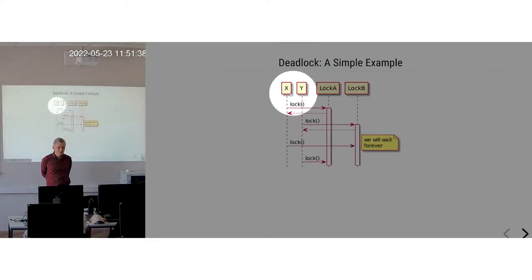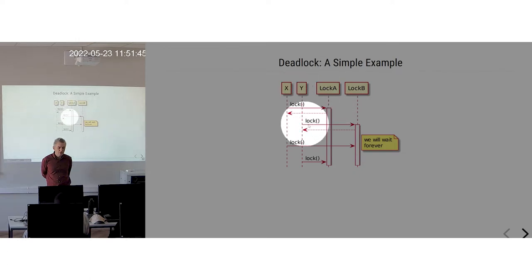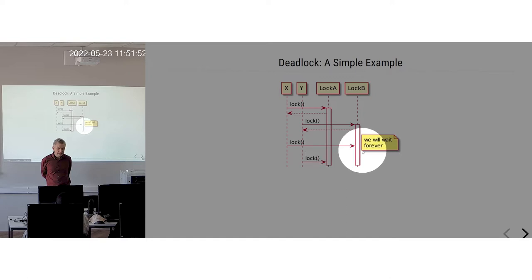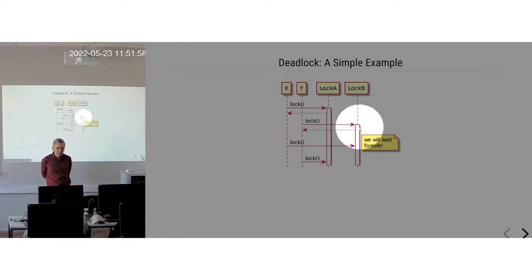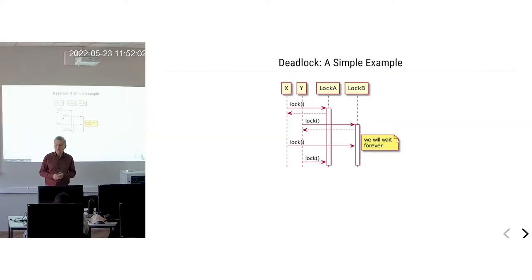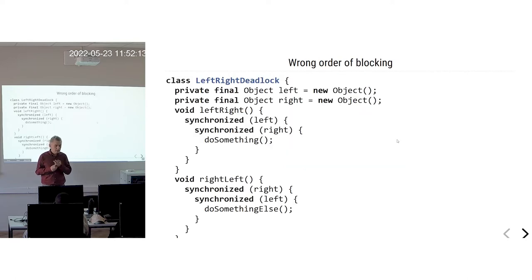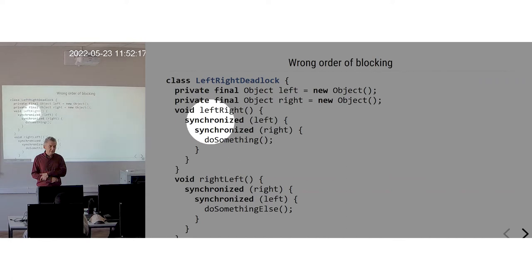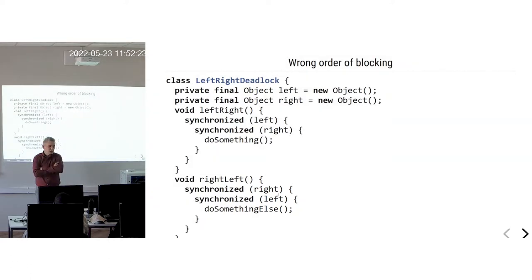We have two locks. The first actor acquires lock A, and the second actor acquires lock B. Now the first one needs to acquire lock B, but it cannot because it's acquired by the second actor. The second actor will not release it unless it acquires lock A. The problem is two actors and two locks acquired in different order. You have two methods: first acquires left then right, this one acquires right then left. It's very easy to get a deadlock in this situation.